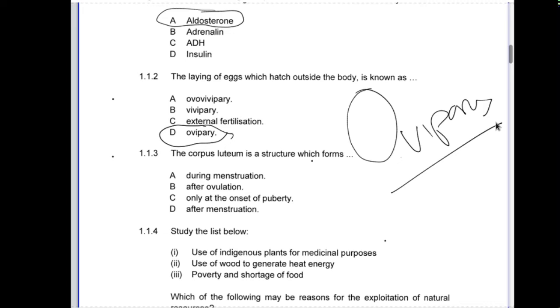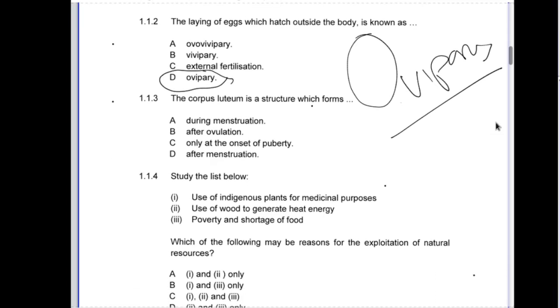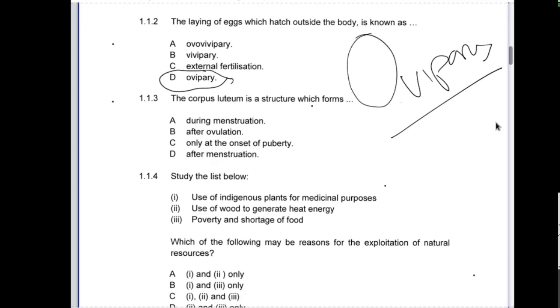The corpus luteum is a structure which forms after ovulation. Why after ovulation? Because the corpus luteum forms after I've released the egg cell, so my Graafian follicle becomes the corpus luteum or the yellow body.